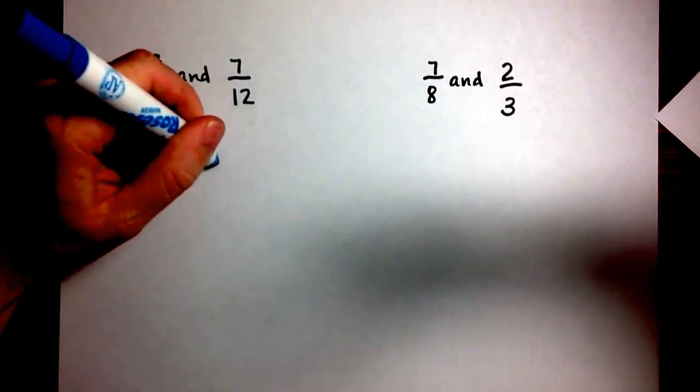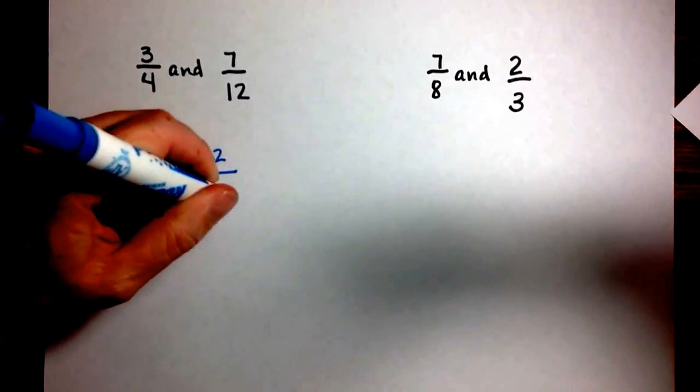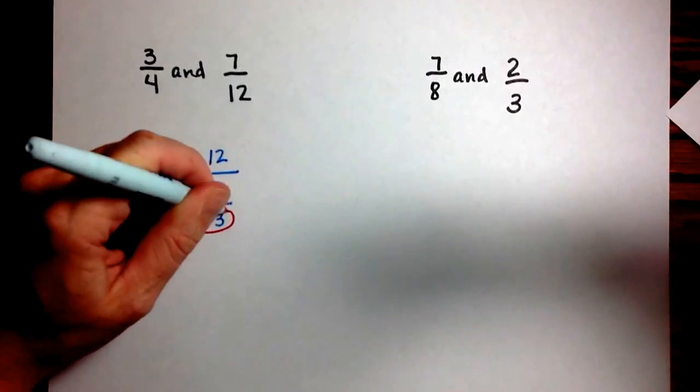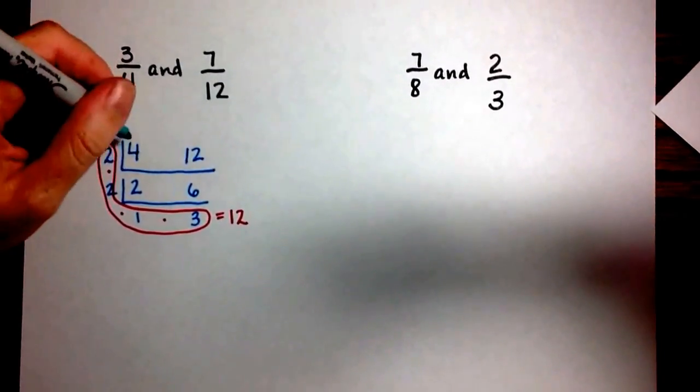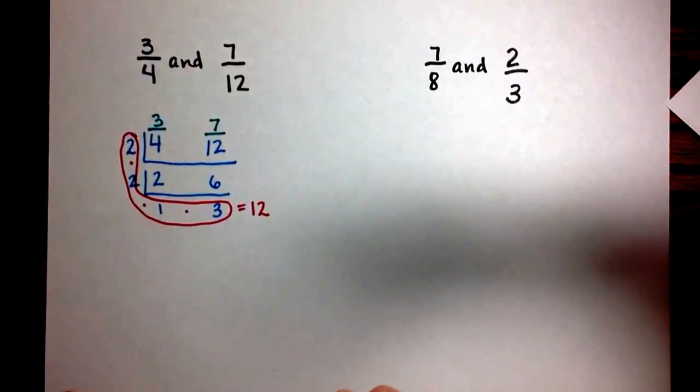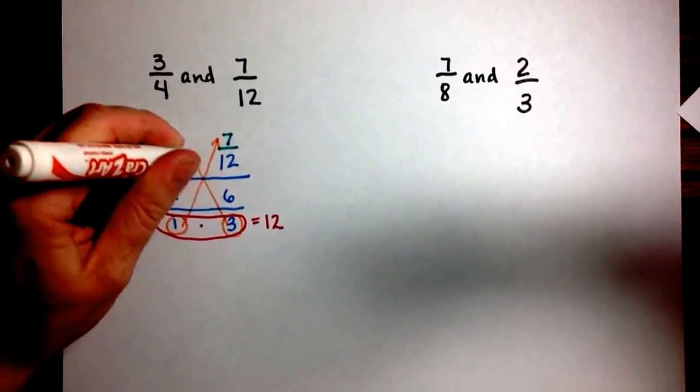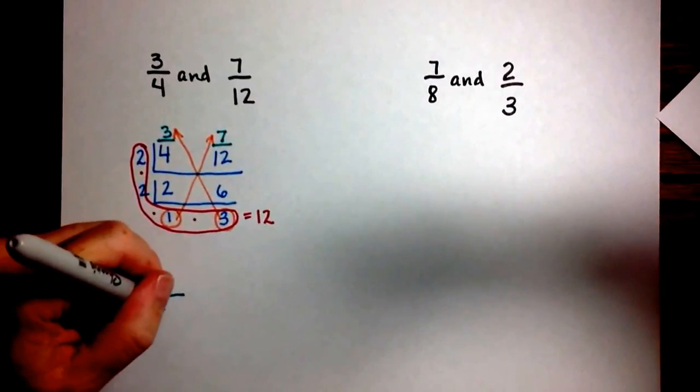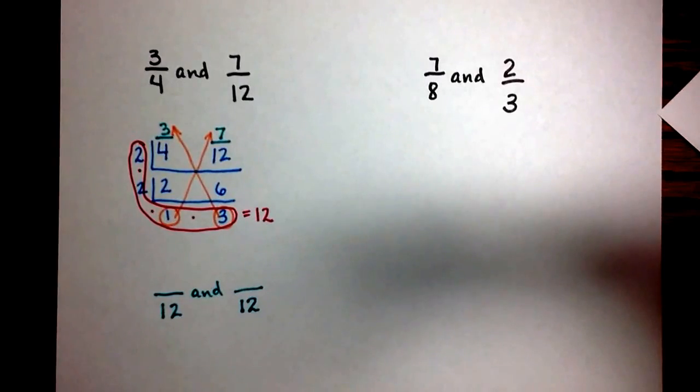3 fourths and 7 twelfths. We'll start with our division machine, the same way we have before, and find the least common multiple of 4 and 12. Which, as we already know, turns out to be 12. And then by putting the old numerators on the top, and multiplying by the diagonal factor, we get our new fraction, which now has a denominator of 12 and the new numerators.